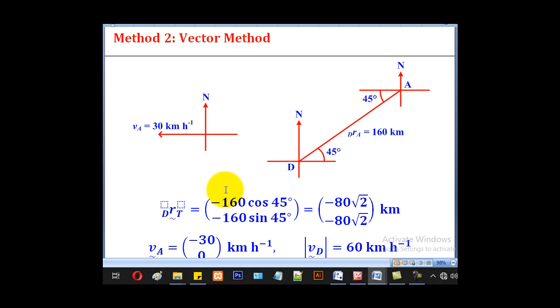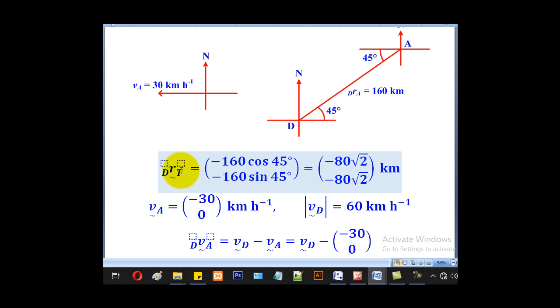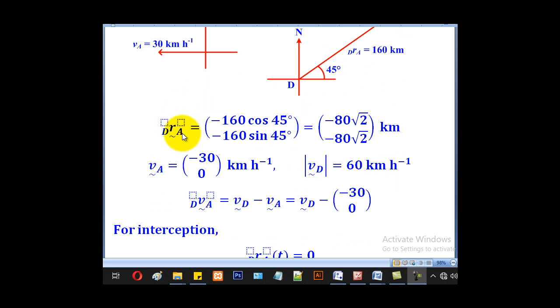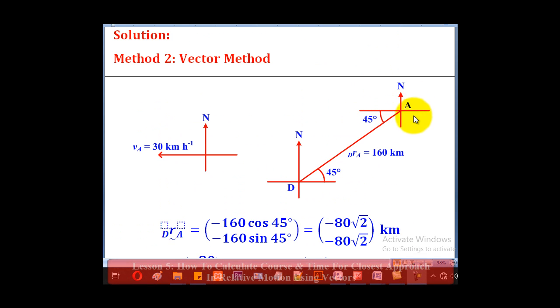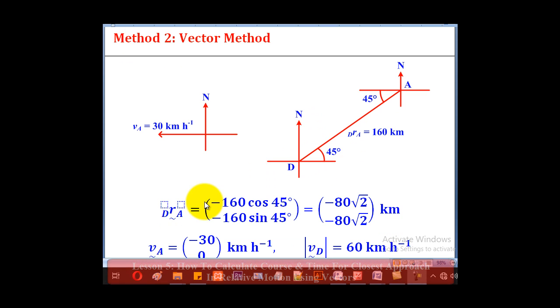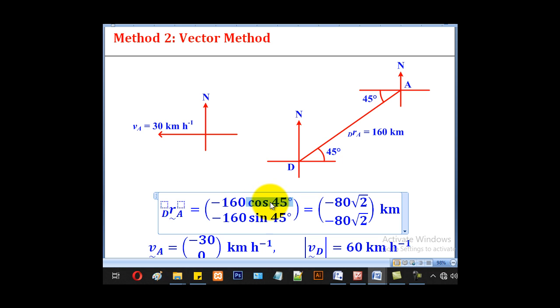Now the next is to convert them to vector form. The initial position of the destroyer relative to the tanker means that you stand at the position of the tanker and locate the position of the destroyer. This position will be horizontally negative 160 cos 45° and vertically negative 160 sin 45°. Since sin 45° is √2/2, we shall get (-80√2, -80√2) kilometers.